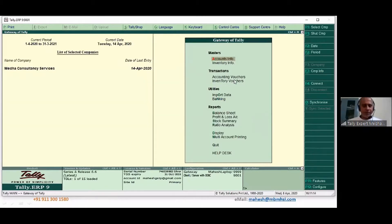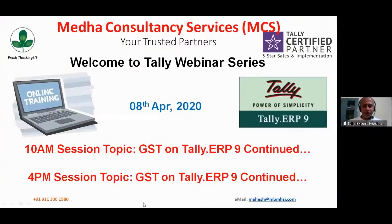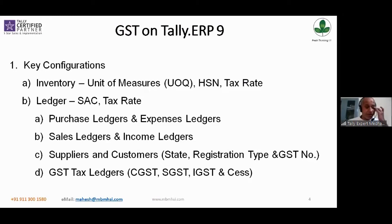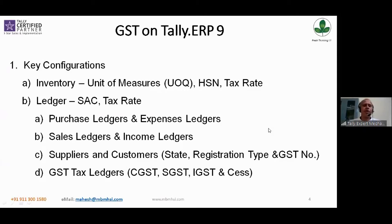Let's move forward and go to the presentation to look at what things we have yet to cover. We covered the sales and purchase part. Now there is an income and expenditure part — in business we have a lot of expenses, and we also have a lot of other incomes which might attract GST or might not attract GST.